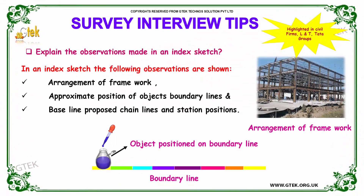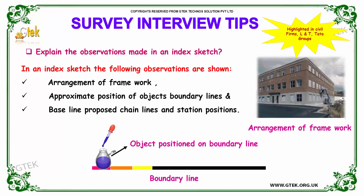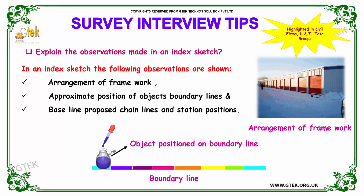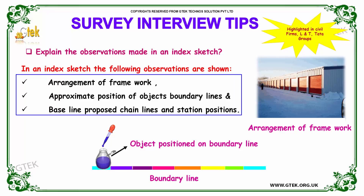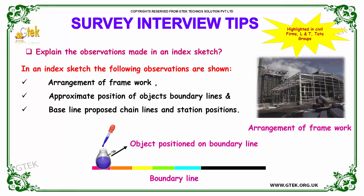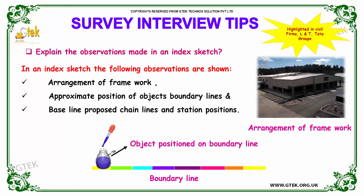Moving on to our next question: explain the observations made in an index sketch. In an index sketch, the following observations are shown: arrangement of framework, approximate position of objects, boundary lines and baseline proportions, chain lines, and station positions. These are the observations that are made in an index sketch.